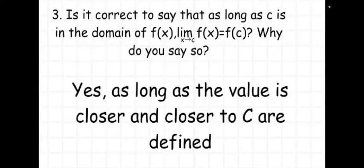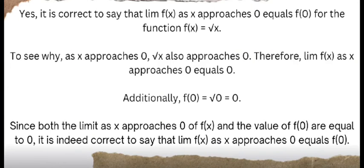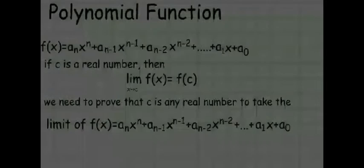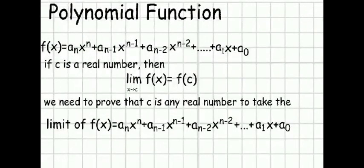Hello everyone, I'm Dan Bardonato. Let's proceed to question number 5. In a polynomial function f(x), is it correct to say that the limit of f(x) equals f(c) as x approaches c? To form a polynomial function, we use the general equation: f(x) = aₙxⁿ + aₙ₋₁xⁿ⁻¹ + aₙ₋₂xⁿ⁻² + ... + a₁x + a₀. We need to prove that c is a real number, because a polynomial is defined for all real numbers.